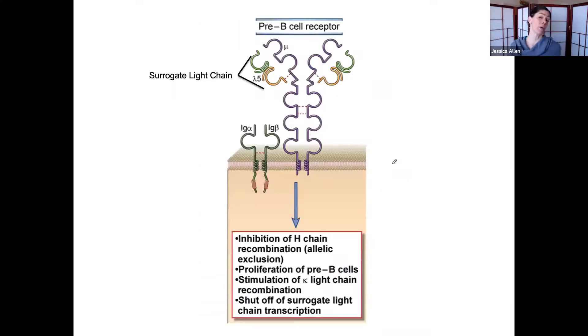Now, if everything went well, we will have a heavy chain that combined with what is called the surrogate light chain. The surrogate light chain is just sort of a temporary thing. We don't want to dive right in and make a heavy chain and a light chain and everything and have neither of them work.